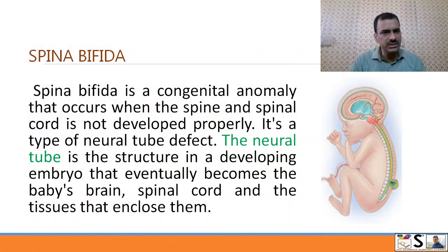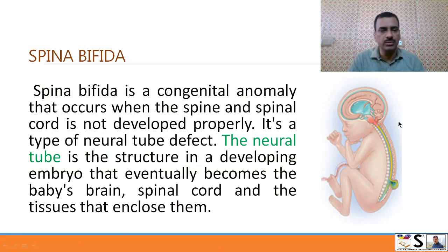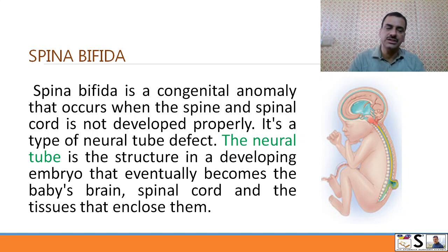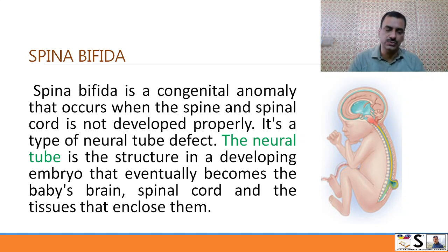What is spina bifida? Spina bifida is a congenital anomaly that occurs when the spine and spinal cord are not developed properly. It is a neural tube defect. The neural tube is the structure in the developing embryo that eventually becomes the baby's brain, spinal cord, and the tissue that encloses them.